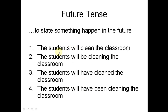Last, we have future tense — to state something that will happen in the future. The characteristic is the use of 'will,' a modal, or 'shall.' Number one, simple future: 'The students will clean the classroom.' This means they will clean — we can add 'tomorrow' or 'next two days.' This is a plan or intention, something scheduled to happen in the future.